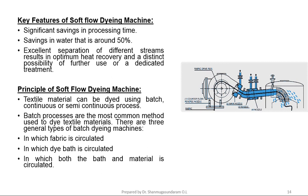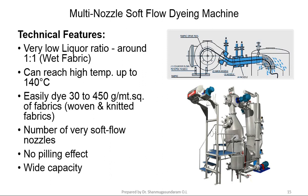Batch-wise processes are the most common method used to dye textile material. There are three general types of batch dyeing machines: one in which the fabric is circulated, one in which the dye is circulated, and one in which both the dye and the fabric are circulated. Technical features of multi-nozzle soft flow dyeing machine: very low liquor ratio of 1 to 1, temperature can be maintained up to 140 degrees Celsius, and the number of nozzles is very high.